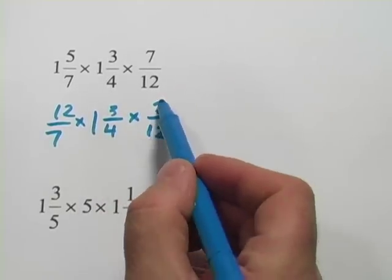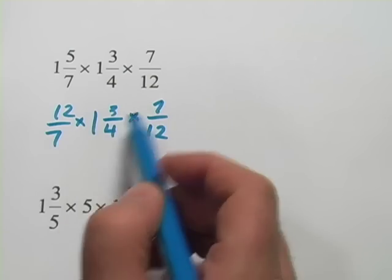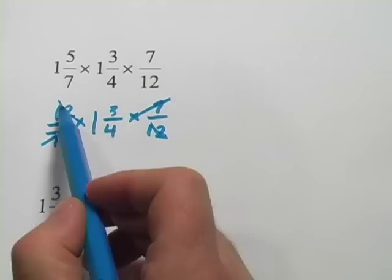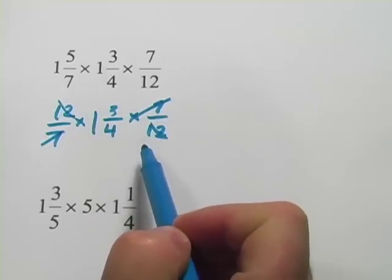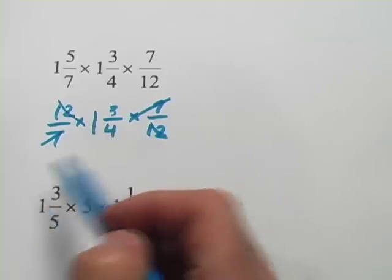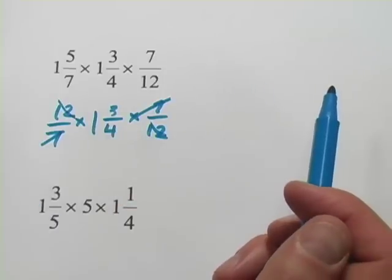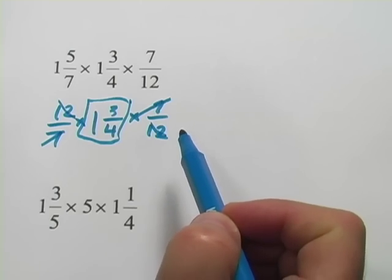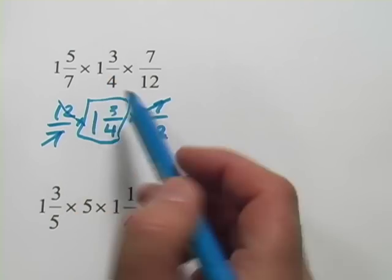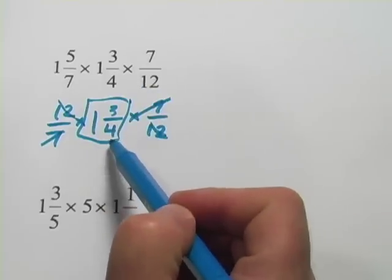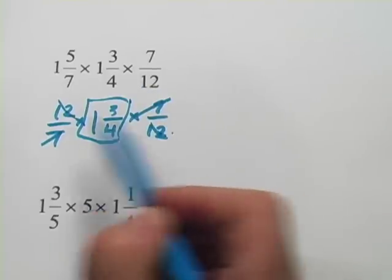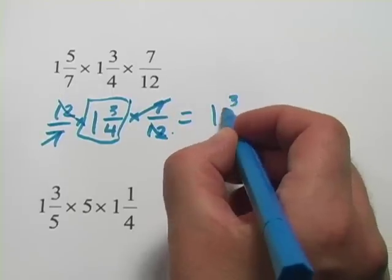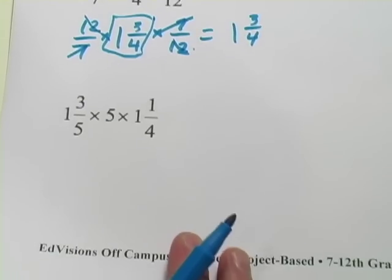You'll notice I have a 7 here on top and a 7 here on the bottom, and then a 12 on the top and 12 on the bottom. These two things, 12 sevenths and 7 twelfths, are reciprocals of each other. When you multiply them together, they cancel out totally. They just become the number 1. So instead of doing the work of converting this to an improper fraction and then having to convert it back afterwards, I've seen that the rest of the problem cancels out and our answer is 1 and 3 fourths. Nice to get lucky like that sometimes.